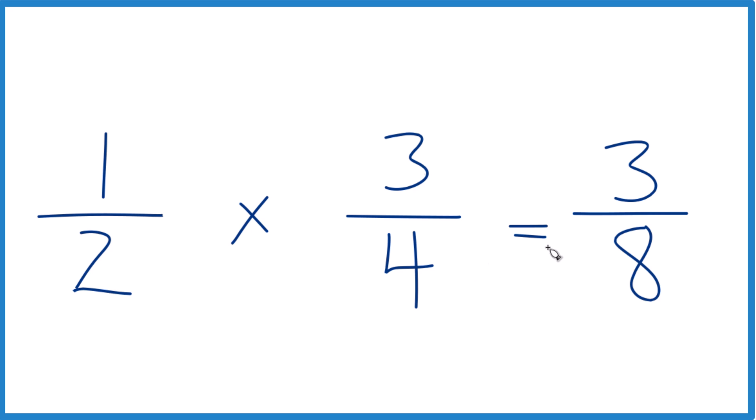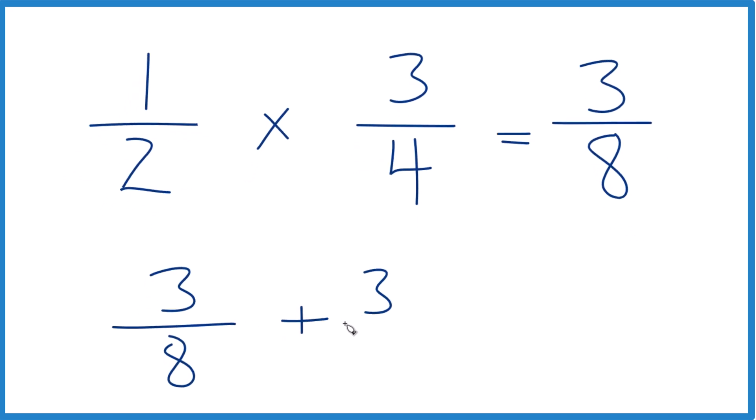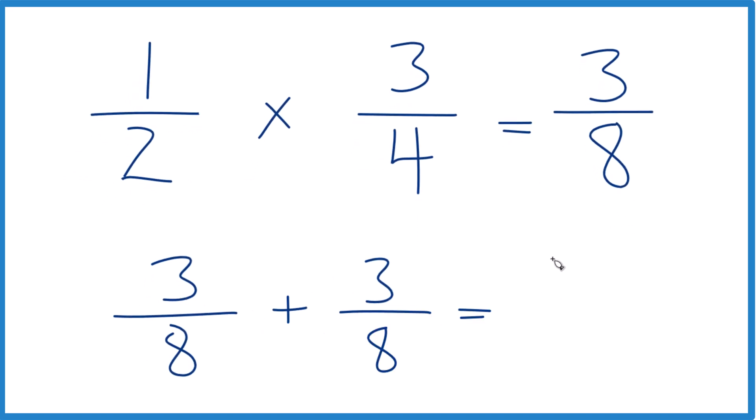So does that make sense? Well, if you think of it, this is one half. So if we add two of these together, three plus three, that's six. And when we add fractions, if the denominator is the same, we keep that the same, six eighths.